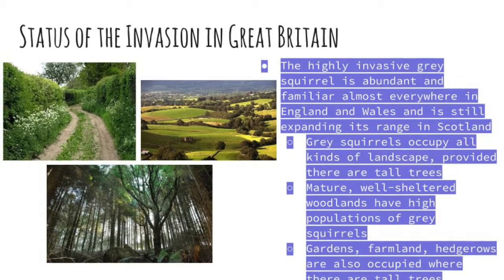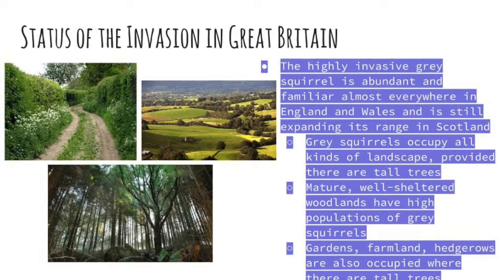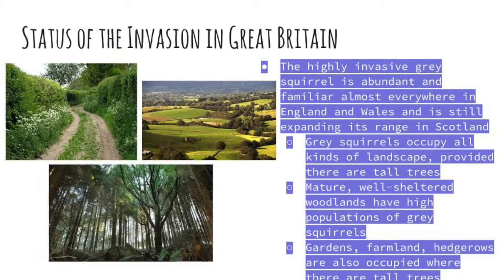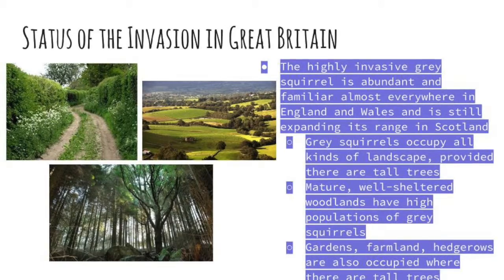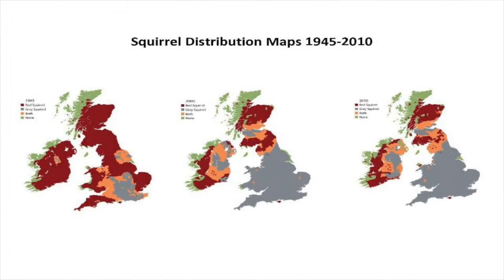Gardens, farmland, and hedgerows are also occupied where there are tall trees. Here is a map of squirrel distribution between 1945 and 2010 in all of Great Britain. As you can see, the gray squirrel population has vastly expanded during this time period.